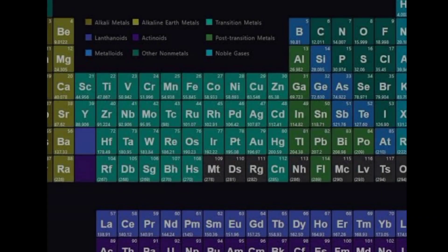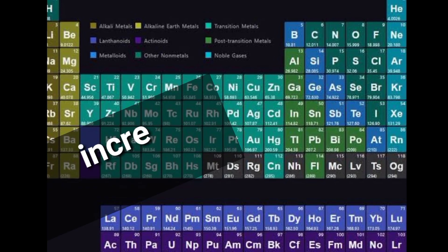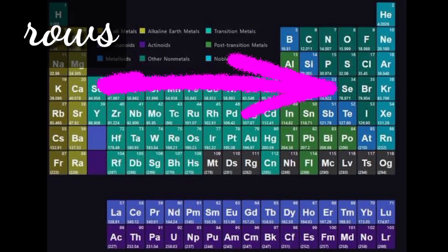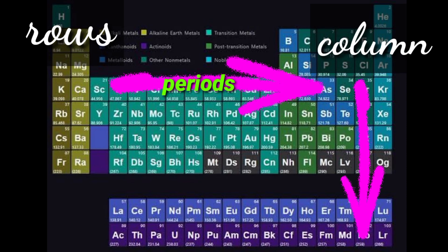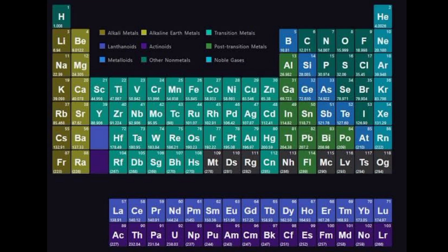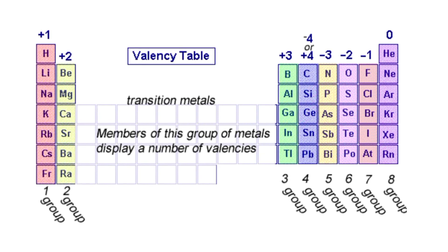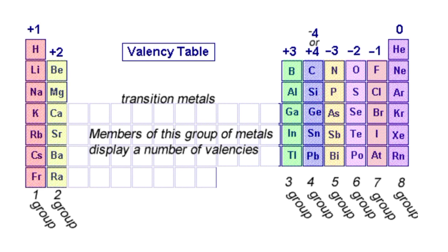The elements in the periodic table are arranged according to increasing atomic number. The rows are called periods and the columns are called groups. The group number in the periodic table gives us the number of valence electrons in the outermost energy shell.